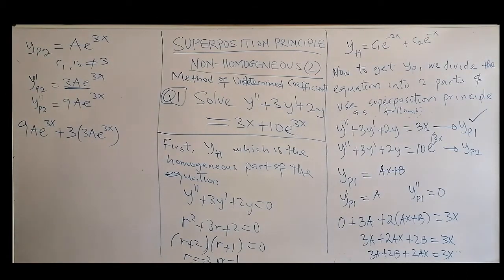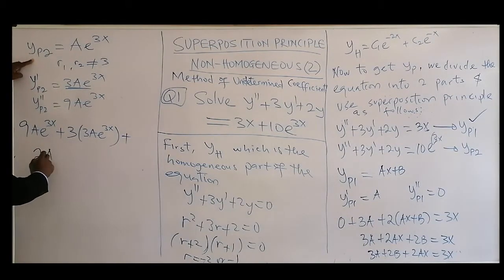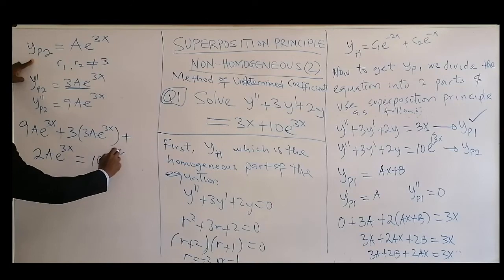Then we can plug back to the YP2. So that will be, second differential is 9Ae^(3x) plus 3 times first differential, 3Ae^(3x), then plus 2 times YP2, that's Ae^(3x), equal to 10e^(3x).